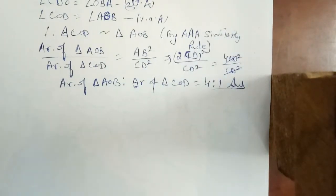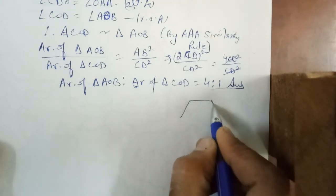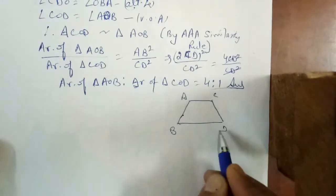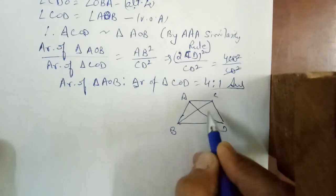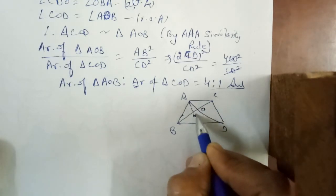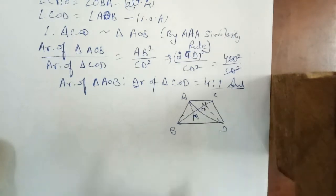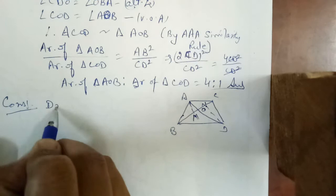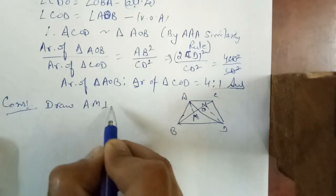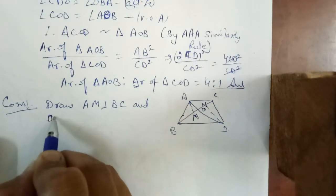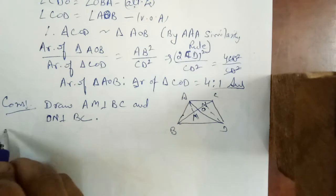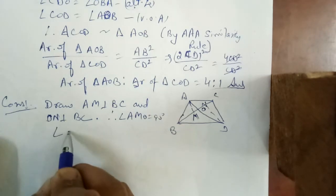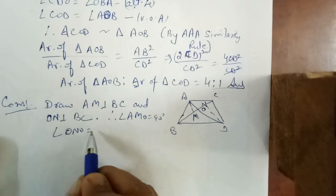For question number 3, consider the trapezium with vertices A, B, C, D intersecting at O. Steps of construction: draw AM perpendicular to BC, and DN perpendicular to BC. So angle AMO equals 90 degrees and angle DNO is also 90 degrees.